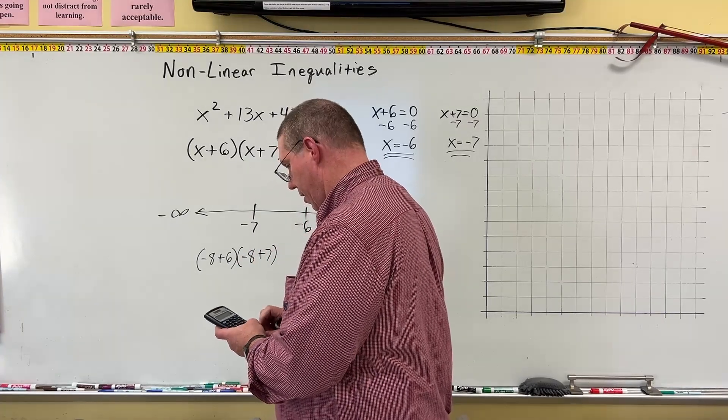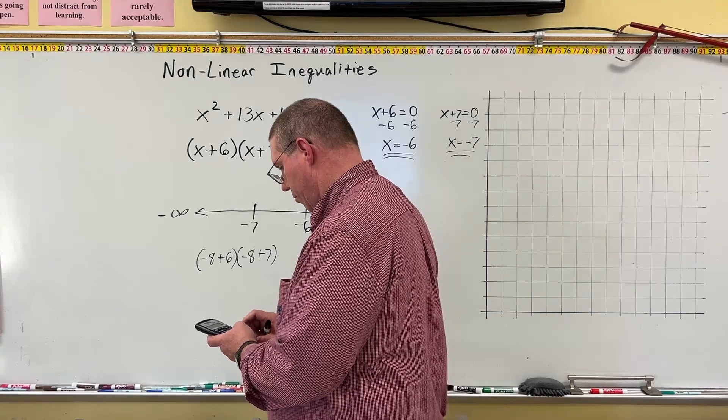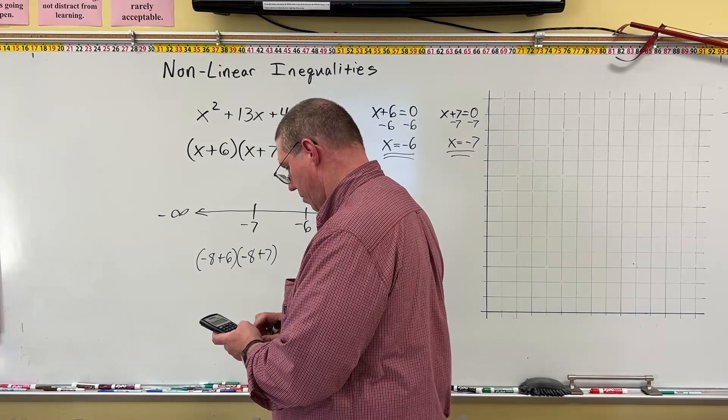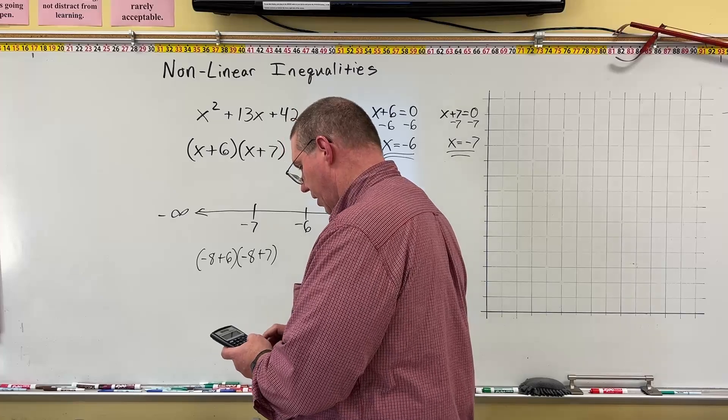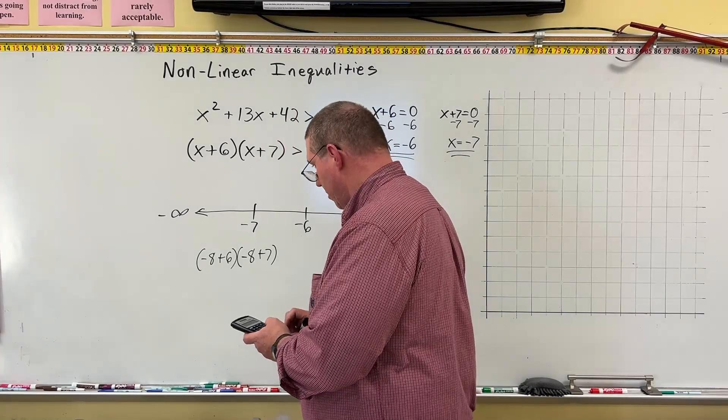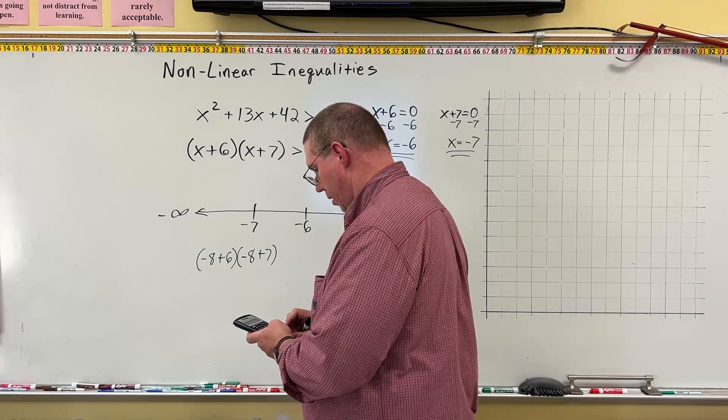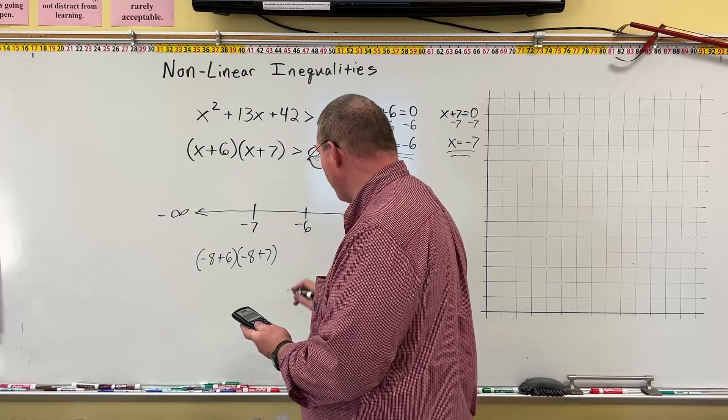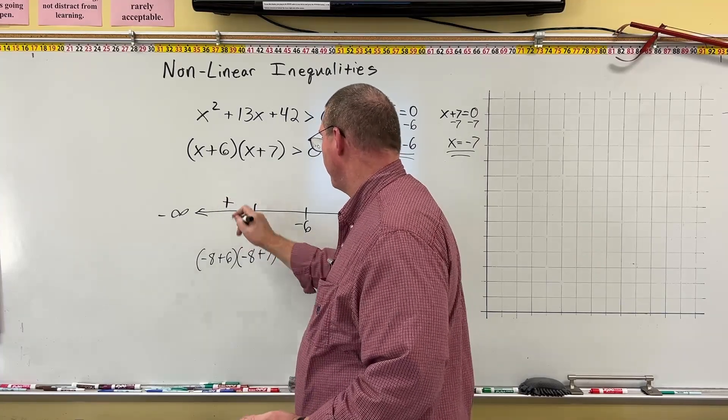And I can do this in the calculator. Negative 8 plus 6. Let me do parentheses. Parenthesis, negative 8 plus 6, close parenthesis, times, parenthesis, negative 8 plus 7, close parenthesis. And this winds up being positive 2, so this is positive.